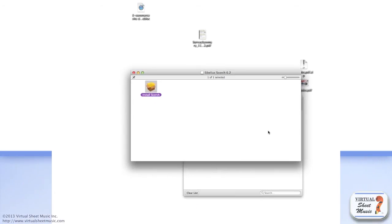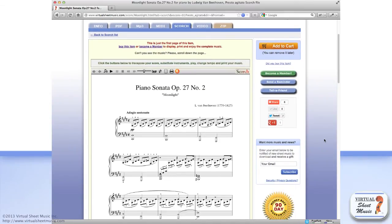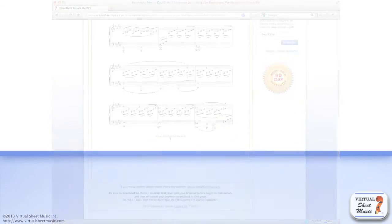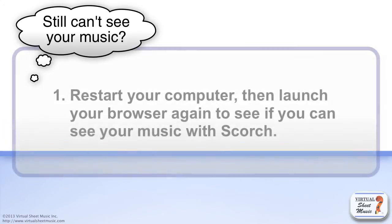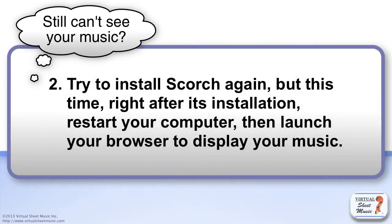And that's it! You have successfully installed Scorch on your computer. If you still can't see your music, you can try to proceed this way: restart your computer, then launch your browser again to see if you can see your music with Scorch. If you still have problems, you should try to install Scorch again, but this time, right after its installation, restart your computer. Then launch your browser to display your music.